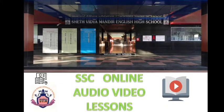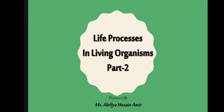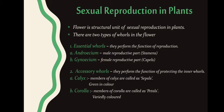Hello students, in today's video we are going to continue a topic from life processes in living organisms part 2. We will start with the next topic, that is sexual reproduction in plants. In the previous video we saw how gamete formation and fertilization takes place. Here we are going to talk about how sexual reproduction takes place in plants and what kind of organs are involved.